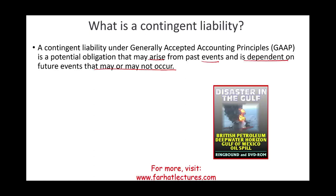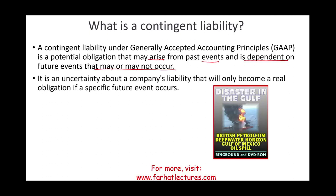Certain liabilities are clear cut — you cannot argue with them. Other contingent liabilities, we may not be so sure; we have to wait for the outcome. It's an uncertainty about the company's liability that will only become real when that future event occurs.